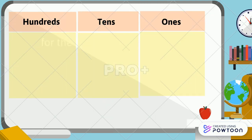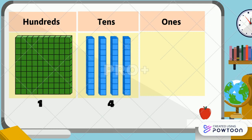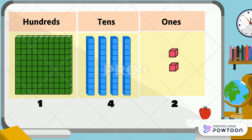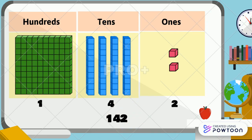Another example: there are 1 hundred, 4 tens, and 2 ones, so altogether there are 142 blocks.